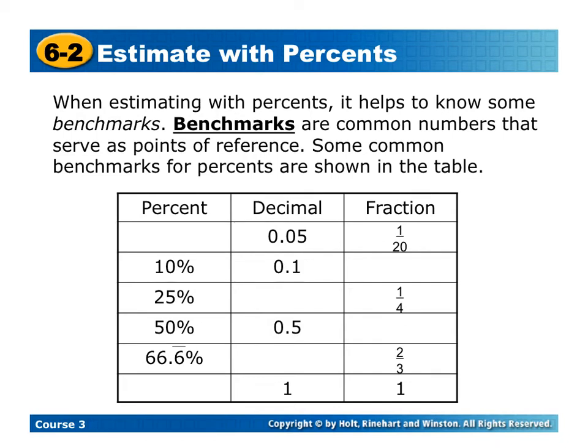So for example, 1/20 is really the same as 0.05 or 5%. 10% is 0.1, 25% is going to be 0.25, and I would suggest getting these down just as points of reference to half.